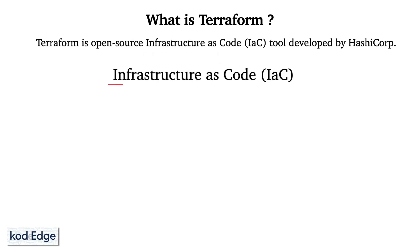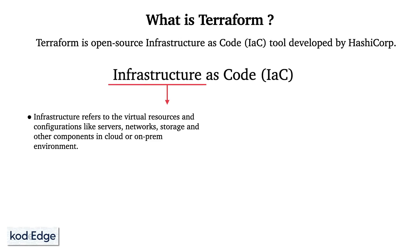Let's understand what is infrastructure. Infrastructure refers to the virtual resources and configurations like servers, networks, storage, and other resources in the cloud or in an on-premise environment. There are providers like AWS, GCP, and many more which provide an environment for this.